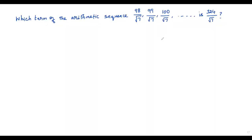We have a problem on arithmetic sequences. The question asks: which term of the arithmetic sequence 98/√7, 99/√7, 100/√7, ... is equal to 324/√7? So we have to find which term 324/√7 corresponds to in this sequence.